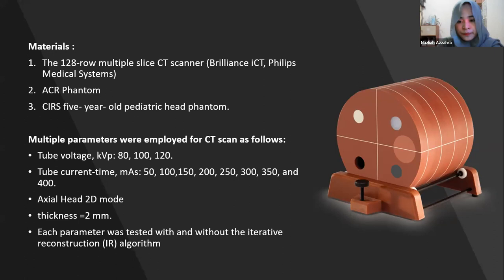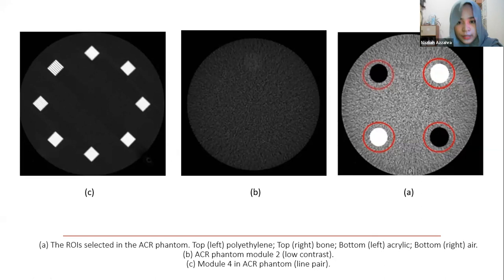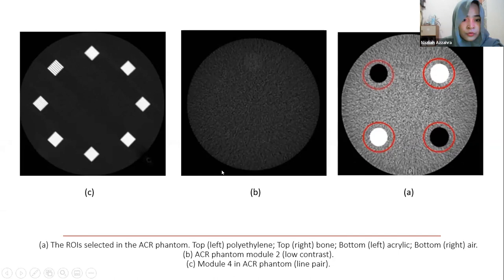The Catphan phantom is equipped with four modules, but in this study we will only use modules one, two, and four. Module one assesses CT number accuracy — the cylinder houses five different materials: polyethylene, bone, acrylic, air, and a water-equivalent background. Module two assesses low contrast resolution; a 25-millimeter cylinder is used to verify the cylinder-to-background contrast level. Module four assesses high contrast or spatial resolution.